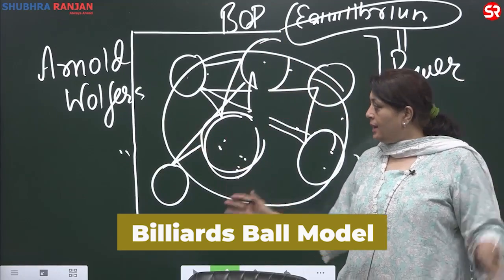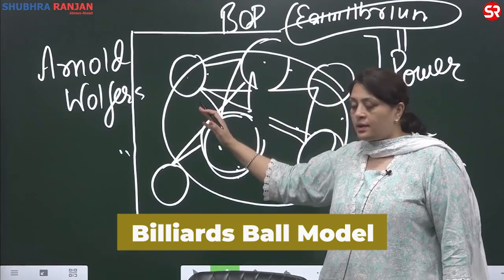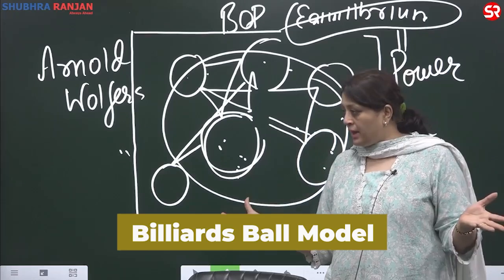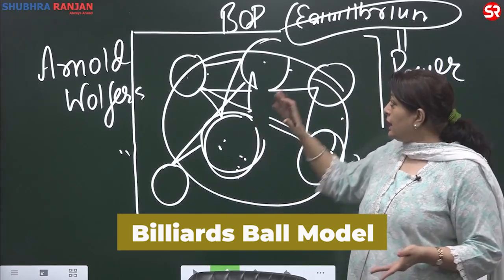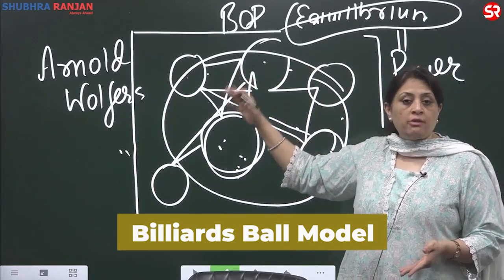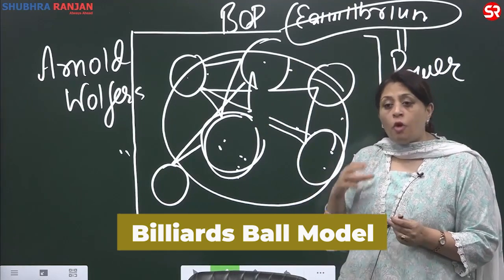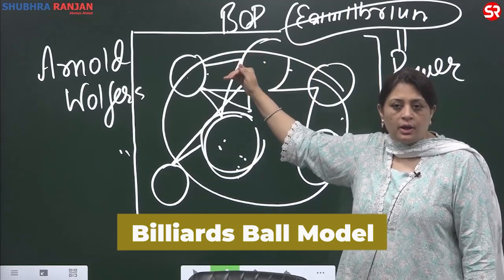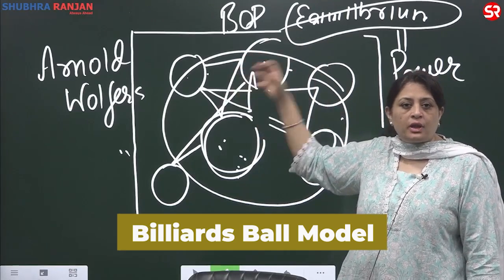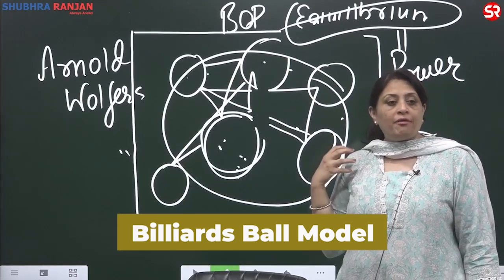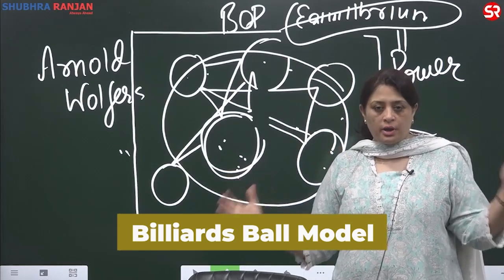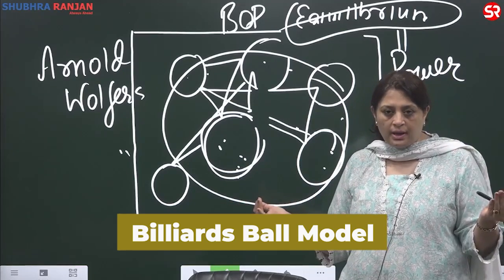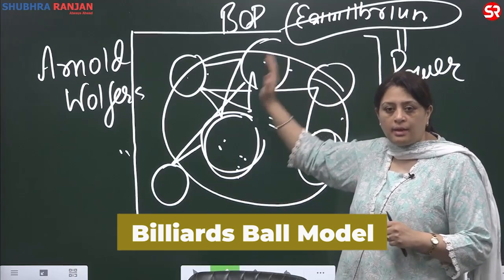If you want to understand what was happening among European states, they were trying to achieve the balance of power. Wars were also taking place for balance of power. Balance of power is a very important concept defining international politics, and what attempts are happening even now is about maintaining the balance.